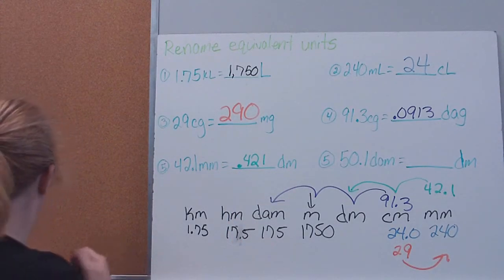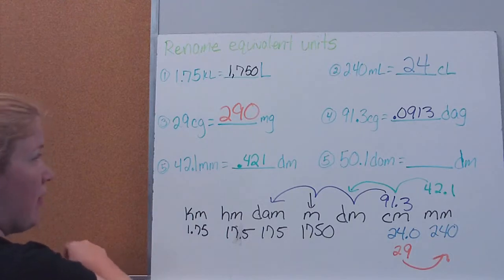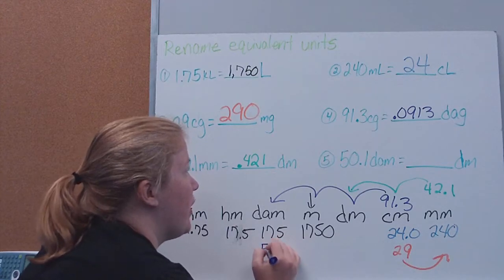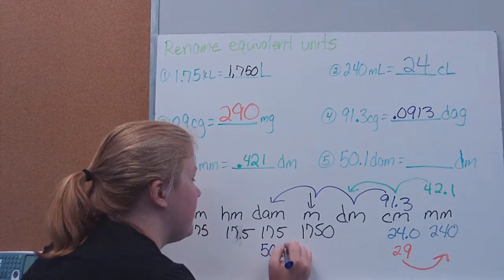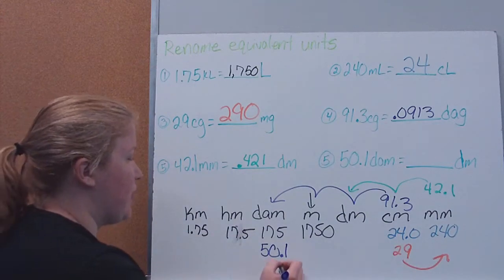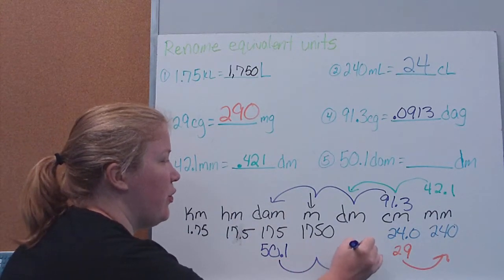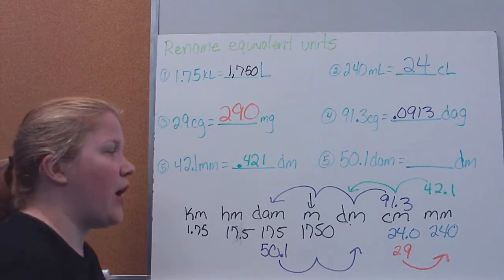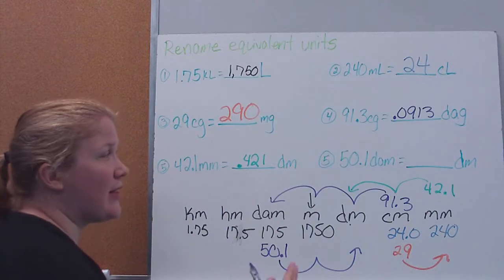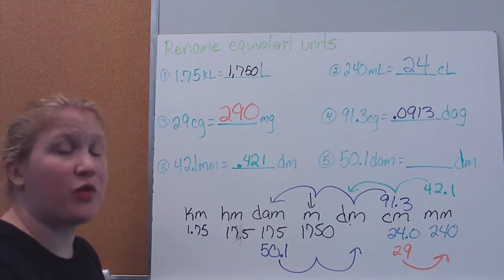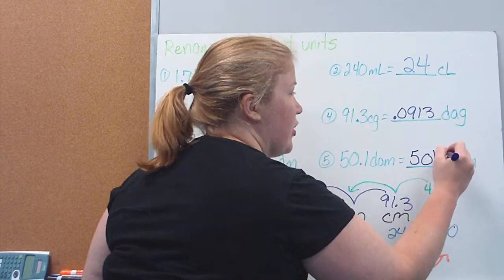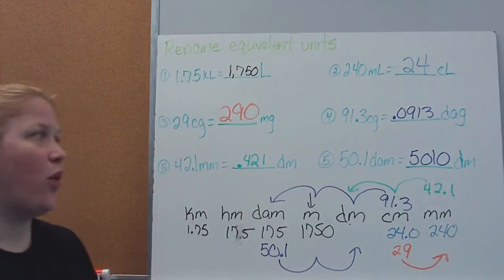Final example: 50.1 decimeters converted to millimeters. Counting from deci to milli: one, two spots to the right. The decimal needs to move two spots to the right — I move it once, then twice, and I need to add a zero placeholder, giving 5,010 millimeters.